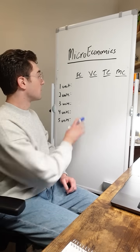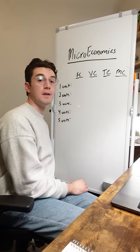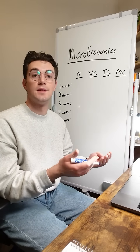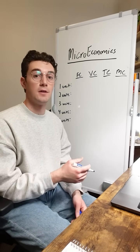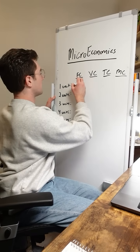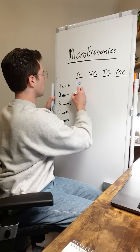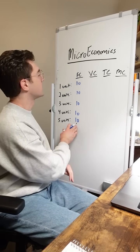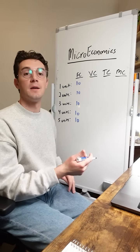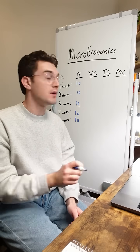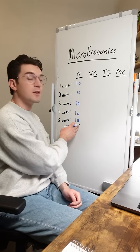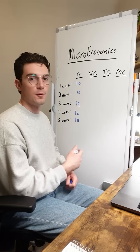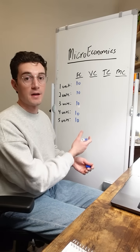We're going to start with the easiest one here — fixed cost. The beauty of fixed cost is that it stays the same per unit of output. I'm just literally going to write 10 bucks here for all of these units. It's fixed, it stays the same. Imagine this like our rent payment — no matter how many units we're outputting, we're going to still pay 10 bucks a month for our warehouse or whatever building we make our good in.